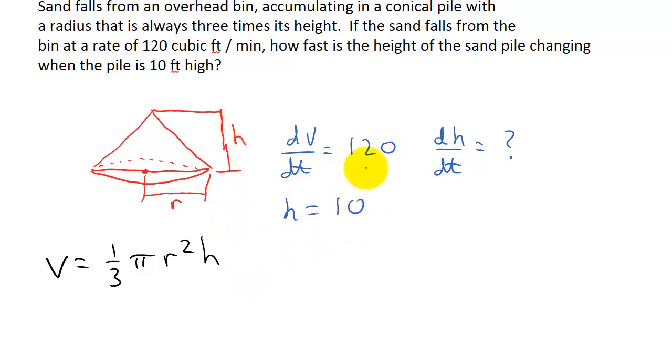Now, if you notice in all the information we have, they don't tell us anything or give us any numbers for the radius. But what they do tell us is the radius is always three times its height. So that means that the radius is three times the height, or three h.